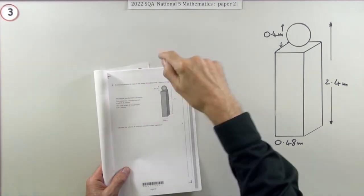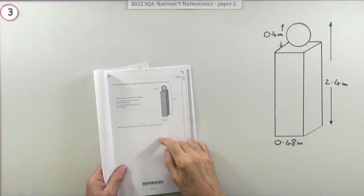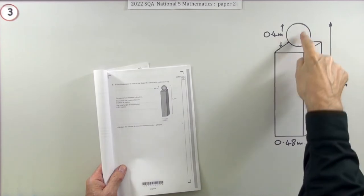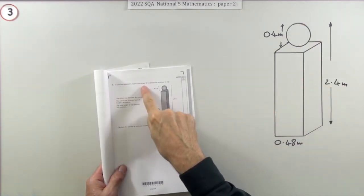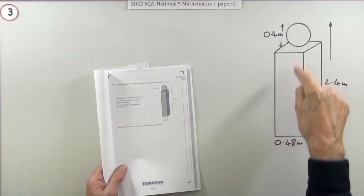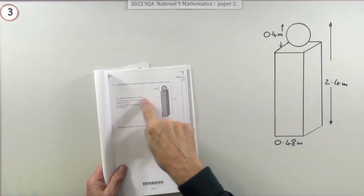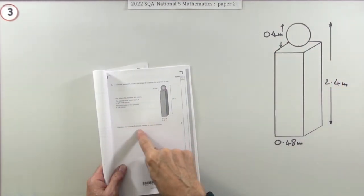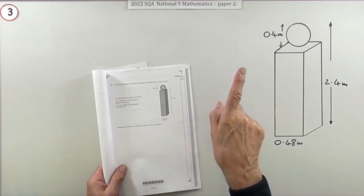Question three from paper two of the 2022 National 5, a three mark question on composite volume. A concrete gate post is made in the shape of a cuboid with a sphere on top. The dimensions are given and you have to calculate the volume needed to make it.